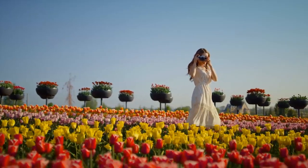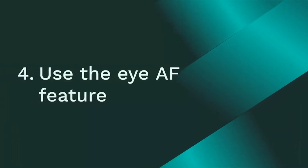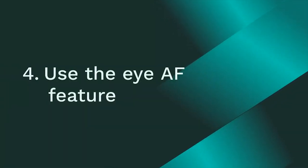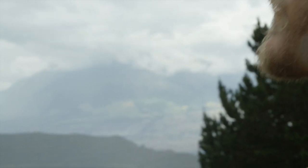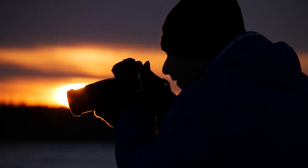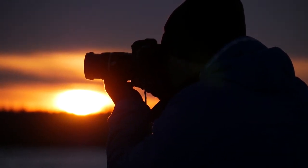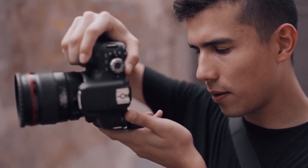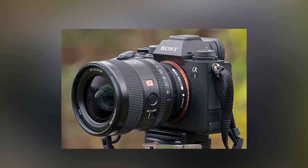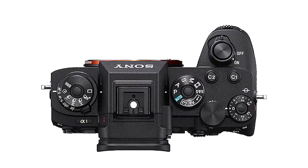Number 4: Use the Eye AF feature. Have you ever tried to capture the perfect shot of a fast-moving subject only to end up with a blurry mess? Or maybe you struggle to keep your subject's eyes in focus while filming a video, leaving you with footage that doesn't quite look right? Well, fear not. The Sony A1 camera has a powerful feature that can help you solve these problems: Eye AF.